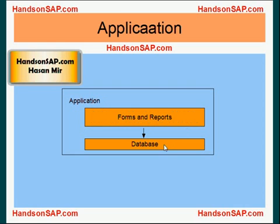An application mainly consists of two parts: the backend database and the frontend forms and reports. Forms is a term used for screens as well — this is where the data entry is done. ERP is also an application, so that's why it also consists of a frontend and a backend.